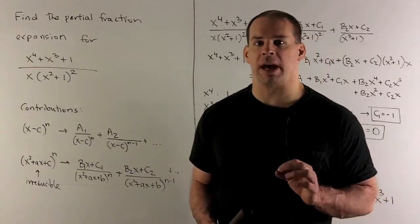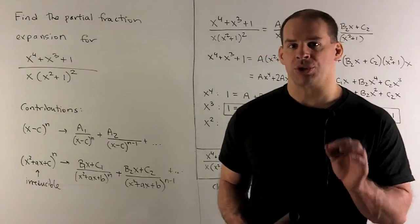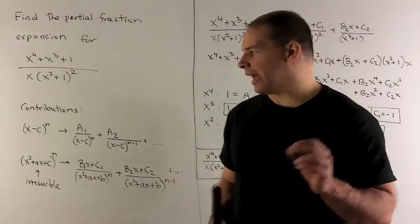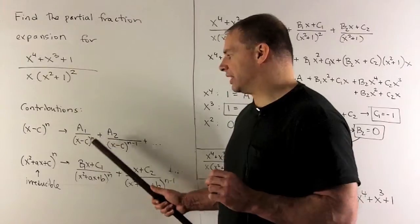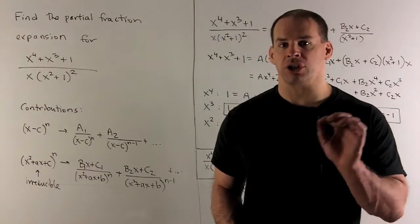What kind of contributions come out of each of these terms? For the linear factor to a power, we start with the highest power. We're going to get A over x minus c to the n, and then I include a contribution for each lower exponent.